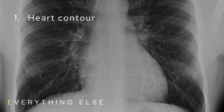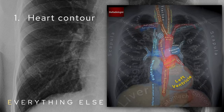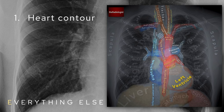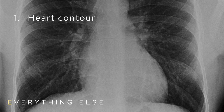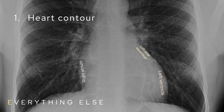E stands for everything else, which for me is three things. Number one: the heart contour. On the left side there are four bumps — the aortic arch, pulmonary trunk, left atrial appendage, and left ventricle. On the right, the contour is formed by the right atrium. I look for a clean contour throughout — if you get consolidation abutting the left ventricle or left atrial appendage, that contour will be lost, indicating consolidation in the lingula of the left lung. Similarly, losing the right atrial contour means consolidation in the right middle lobe. This is known as the silhouette sign.